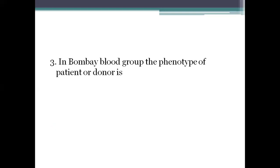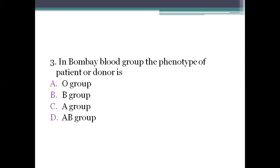Next question: in Bombay blood group, the phenotype of patient or donor is? Option A: O blood group. Option B: B group. Option C: A group. Option D: AB group. The right answer is option A, O group. Bombay blood group people lack the A, B, or H antigen on their RBCs as well as in secretions and plasma. Their serum consists of very strong anti-H, anti-A, anti-B, and anti-AB antibodies, which renders them incompatible with all other RBCs except those from another Bombay individual.